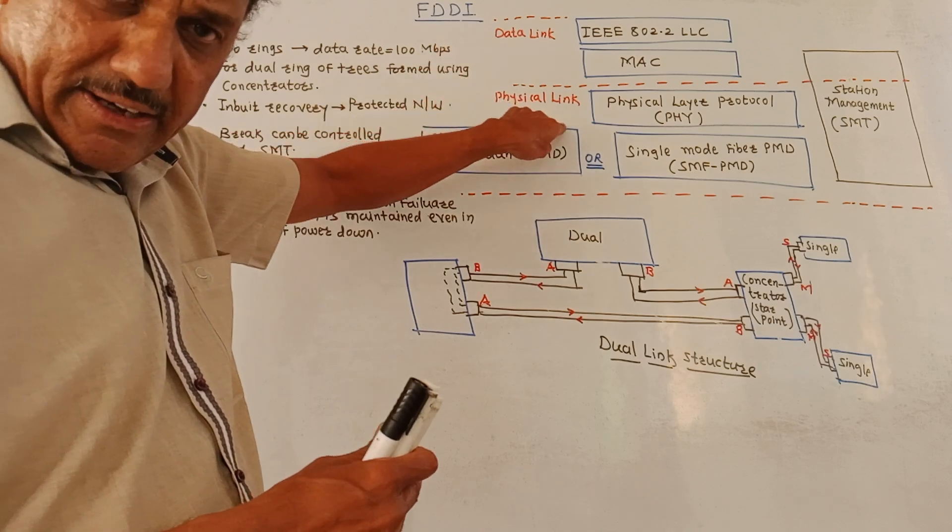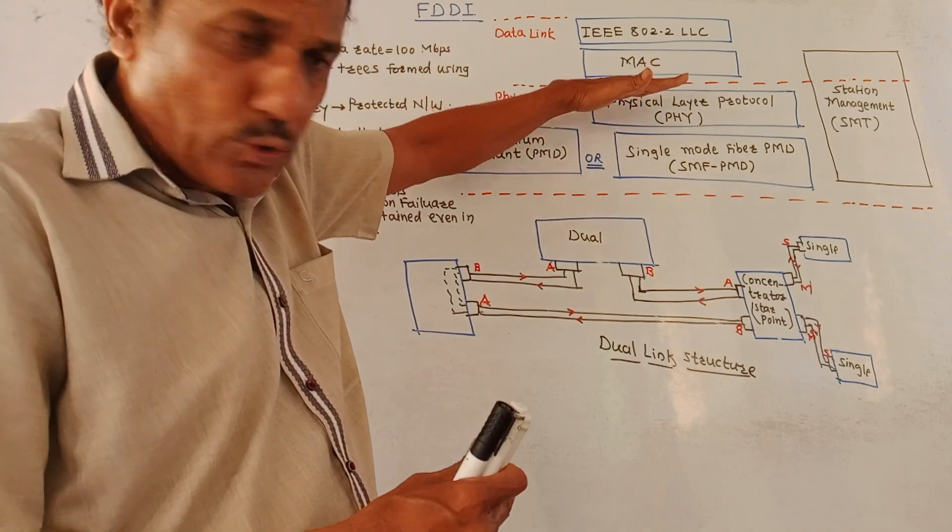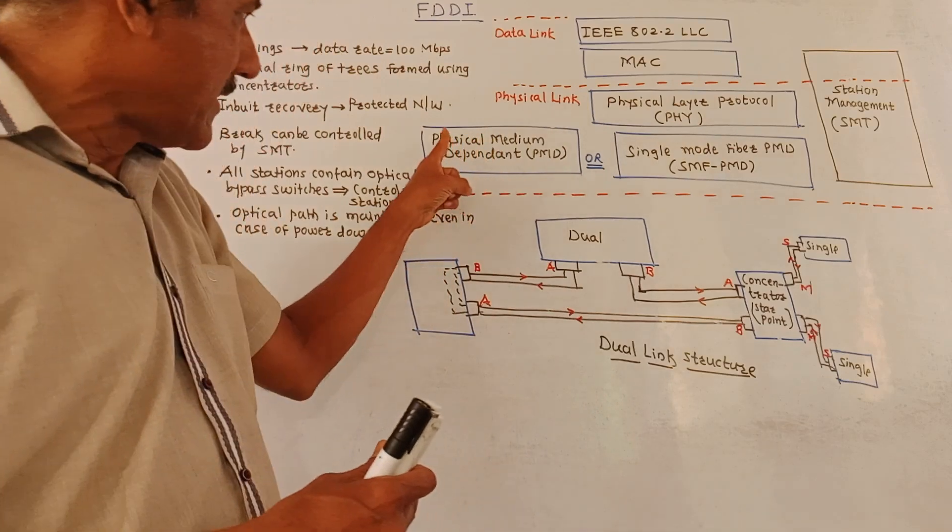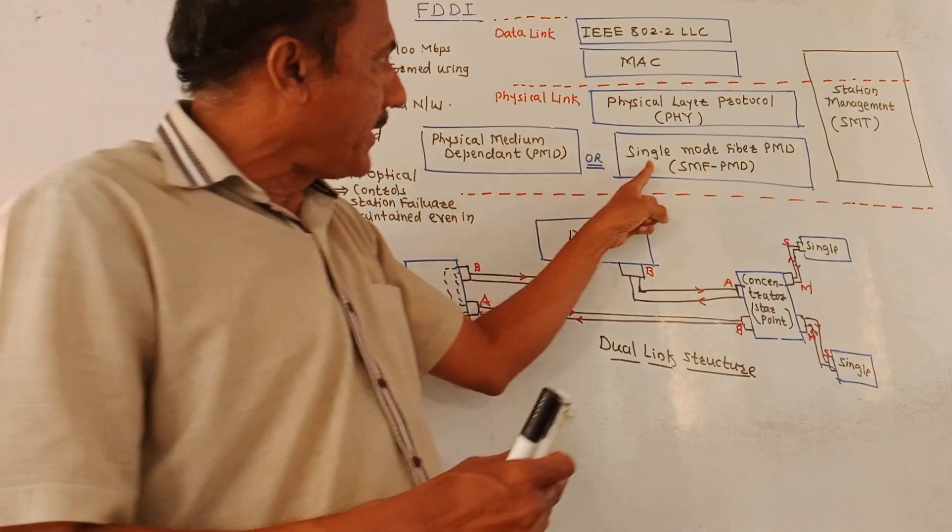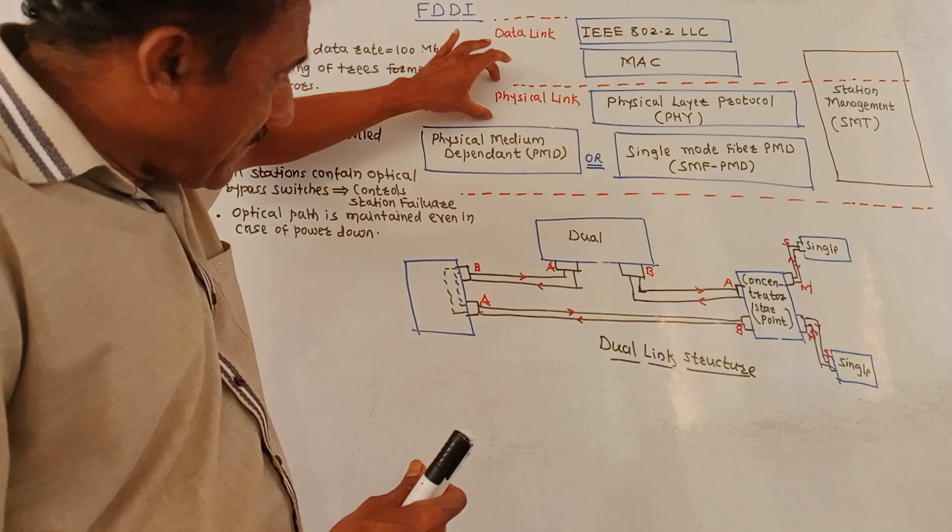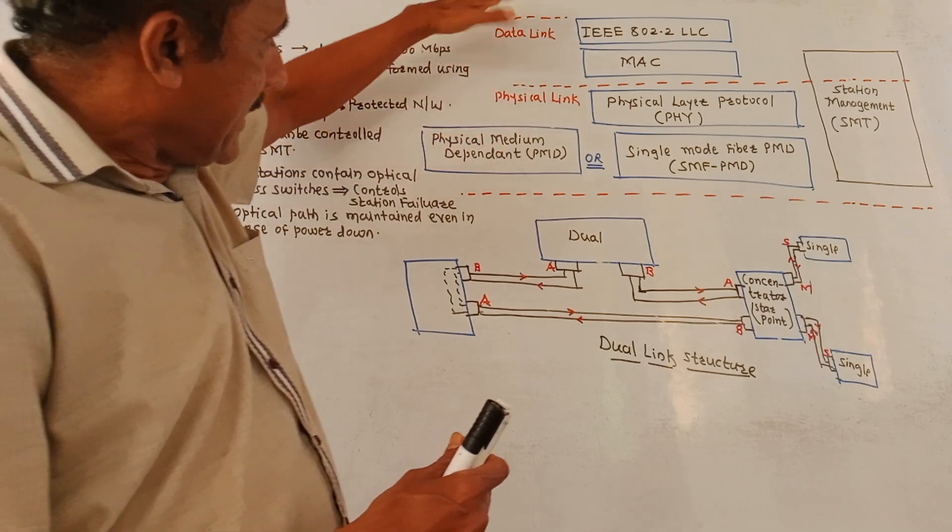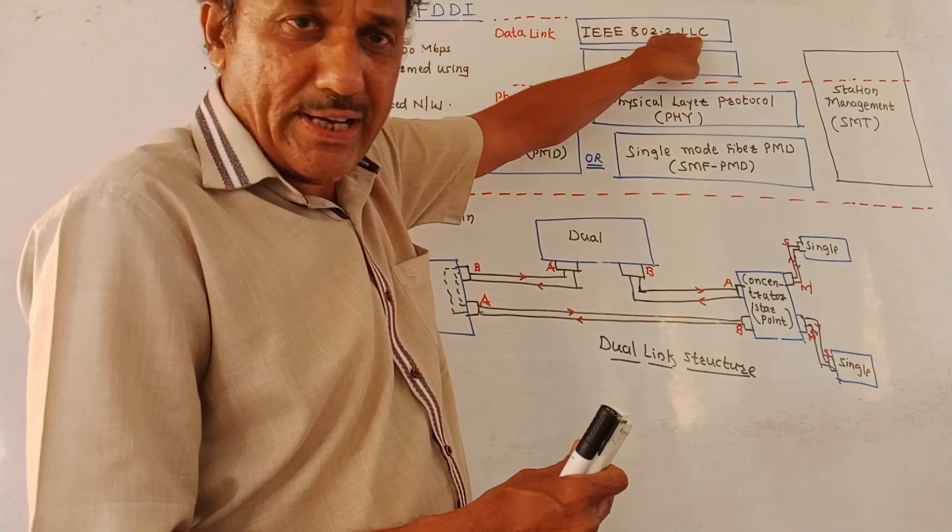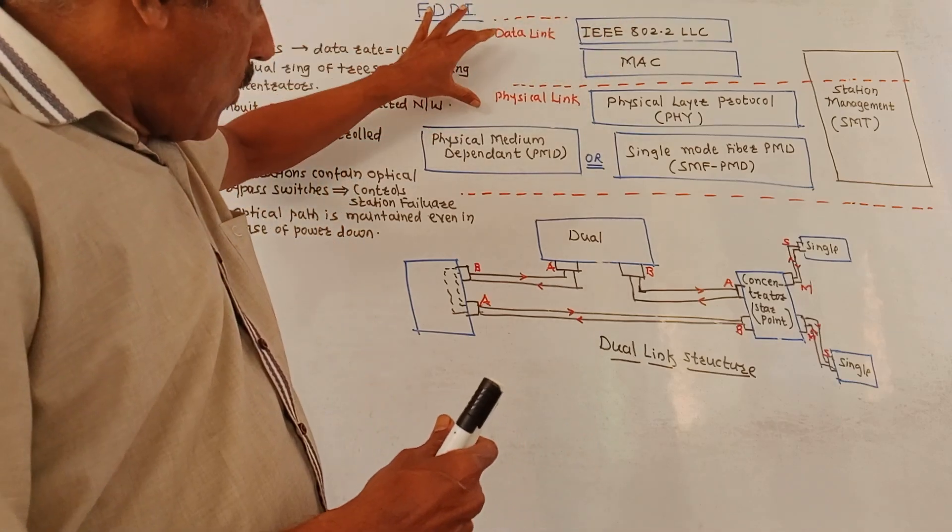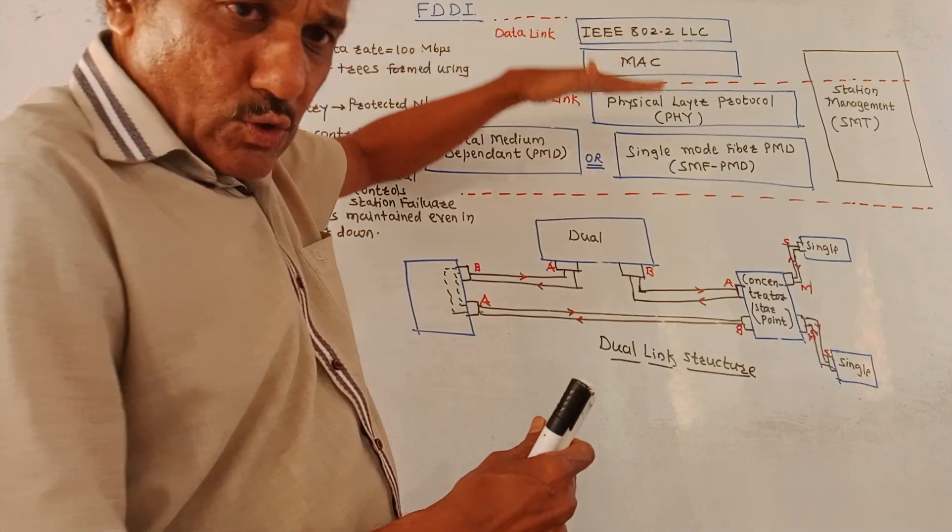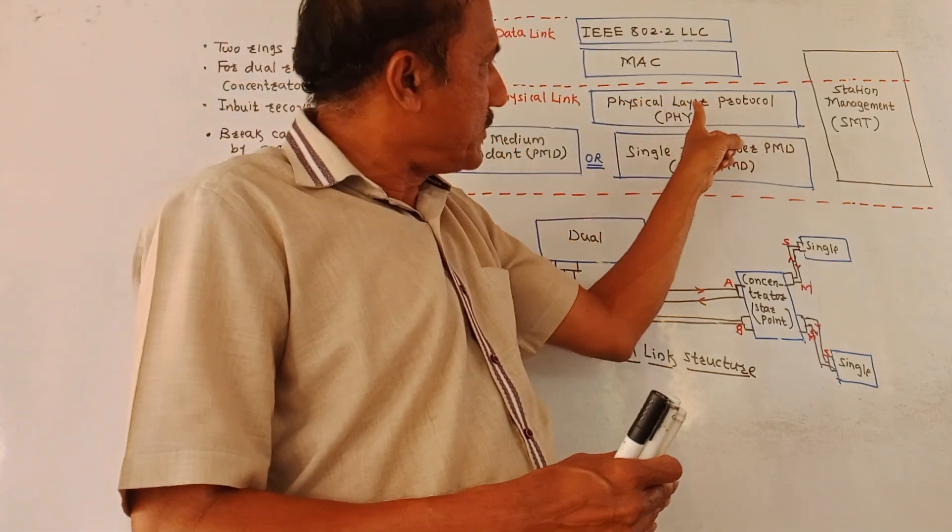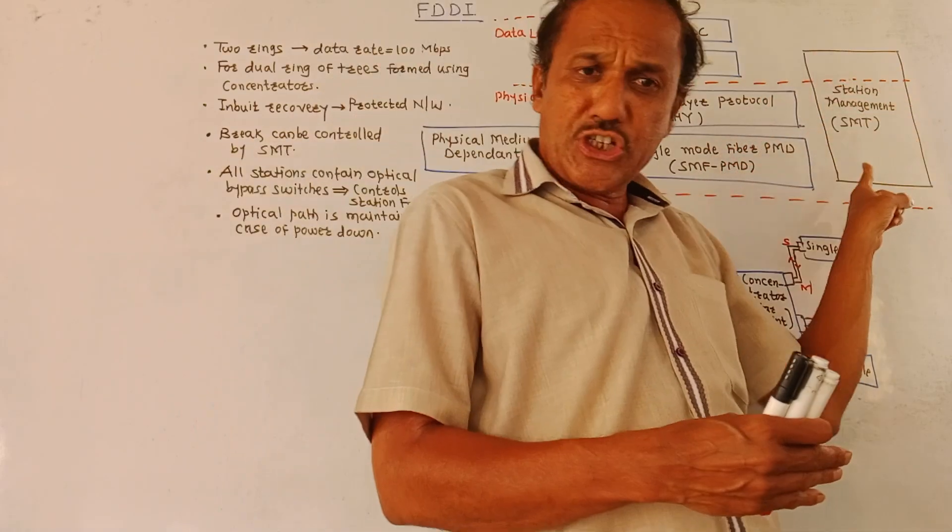In case of this interface, the physical layer is divided into two parts for this FDDI interface. One is physical layer protocol and another is physical medium dependent, that is PMD, or single mode fiber PMD, that is SMF PMD. As I said, physical layer is divided into two parts. In the data link layer, we have IEEE 802.2 LLC as an interface and this is the MAC layer. Now, to provide the connection between physical layer and data link layer, this physical layer protocol, that is PHY, is used.